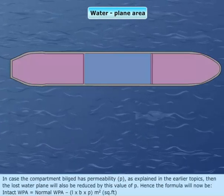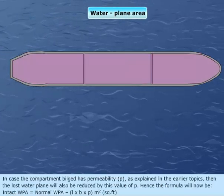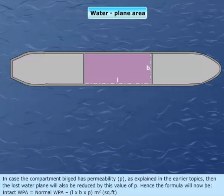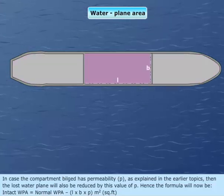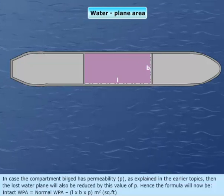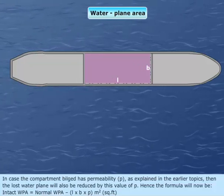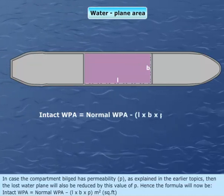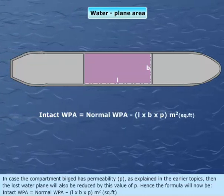In case the compartment bilged has permeability P, as explained in earlier topics, then the lost water plane will also be reduced by this value of P. Hence, the formula will now be: intact WPA equals normal WPA minus L times B times P meters squared or square foot.